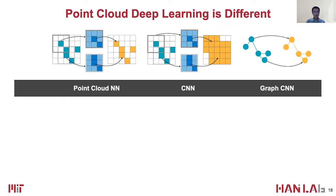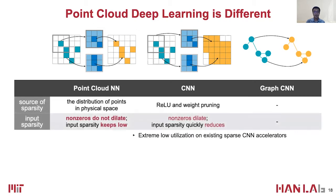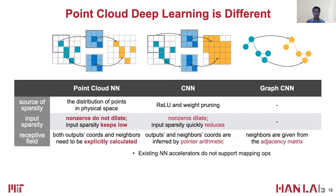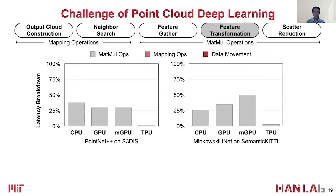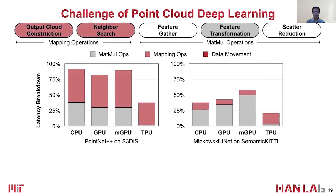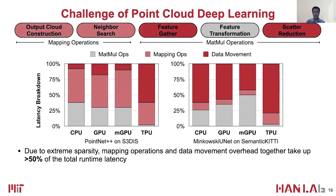We summarize the differences among point cloud networks, convolution networks, and graph convolution networks in this table. The difference in sparsity leads to low utilization of previous sparse neural accelerators. Newly introduced mapping operations are unsupported by previous neural accelerators. Explicit gather and scatter are not supported by previous graph convolutional neural accelerators and previous planar accelerator Maserasi. Evaluated on CPU, GPU, mobile GPU, and TPU, mapping operations and data movement can cover more than 50% of total latency.